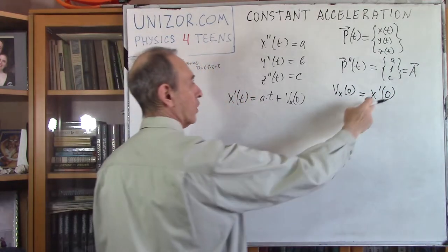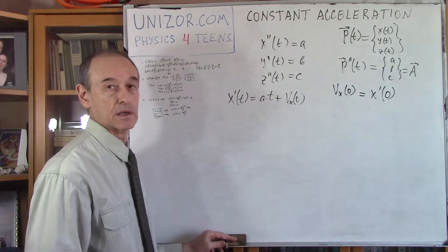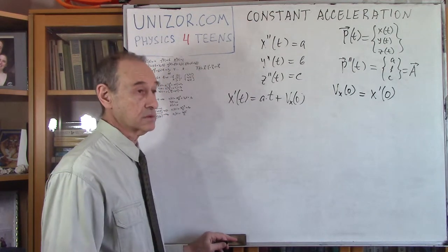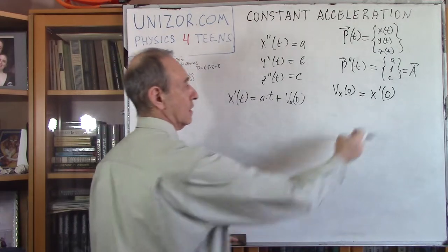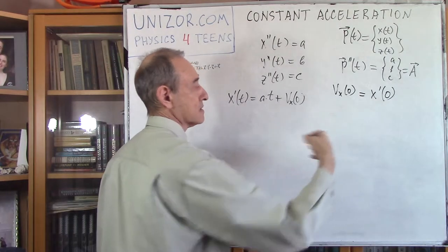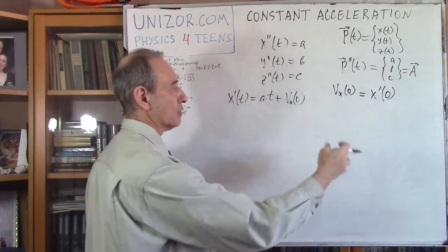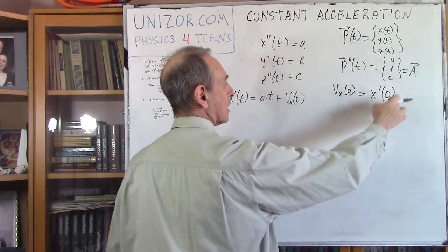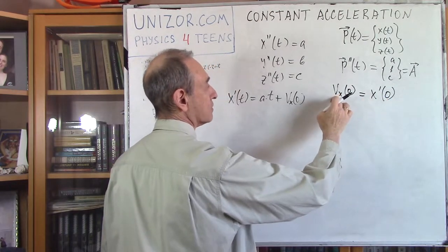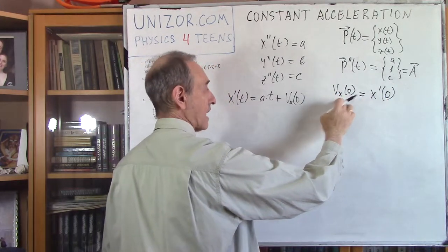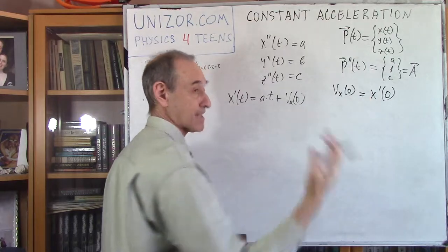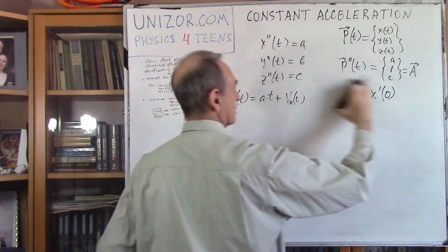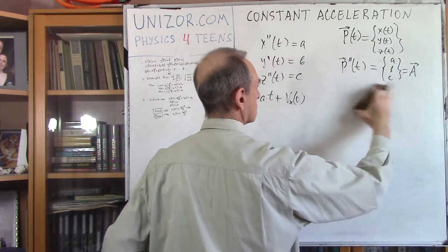is nothing but the initial value. The first derivative of the coordinate function is the velocity. If it's x, it's the x component; if it's y, the y component; if it's z, the z component. So these are components of velocity. That's why I use v with index x, meaning it's the x component of velocity at moment t equal to 0.